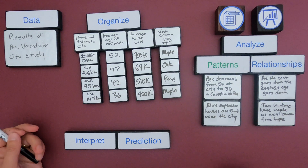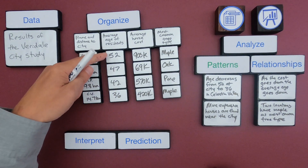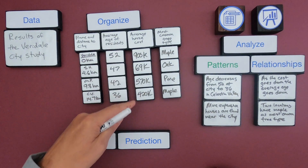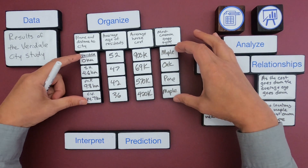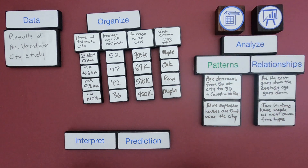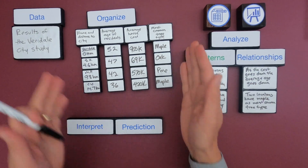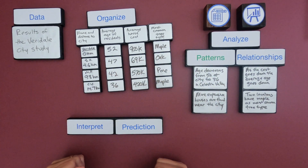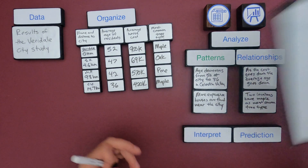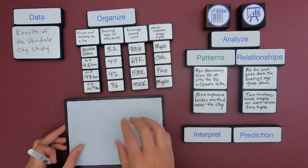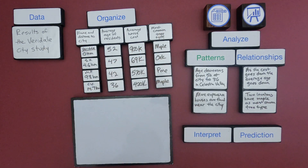A couple of relationships I noticed: as the age goes down, the cost goes down — or as the cost goes down, the age goes down. Also, there are a couple of locations that have maple as the most common tree. I'm starting to look at relationships between the two, but now I want to think about whether any of these are causes or correlations. I want to start thinking about these big headings and how they're related to each other.